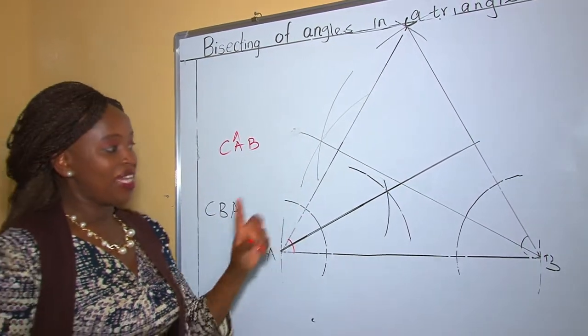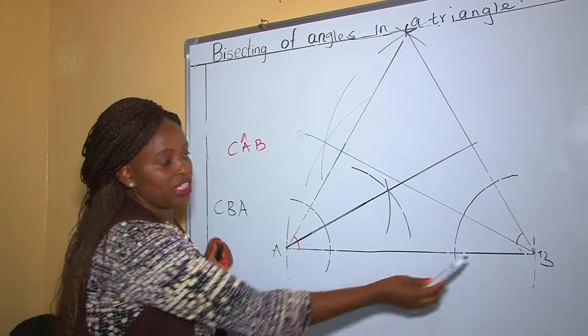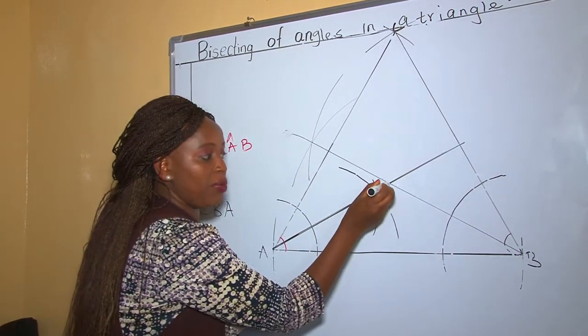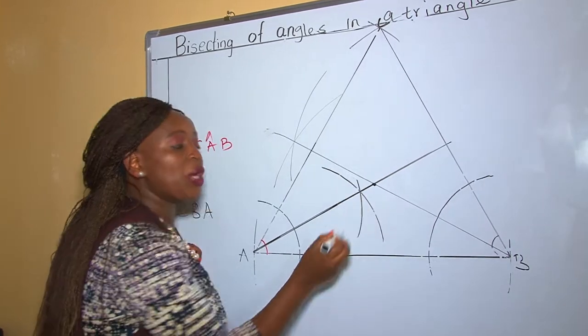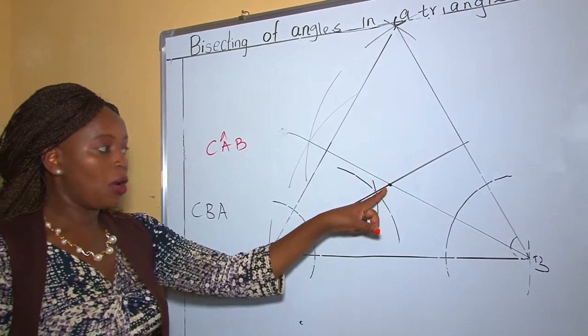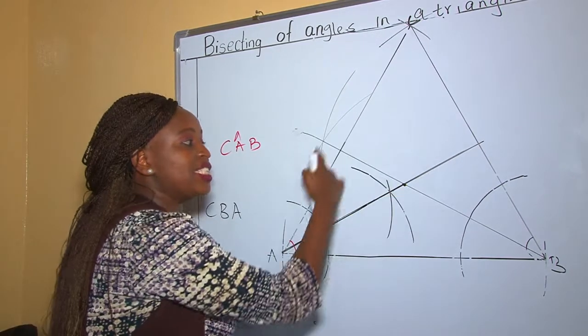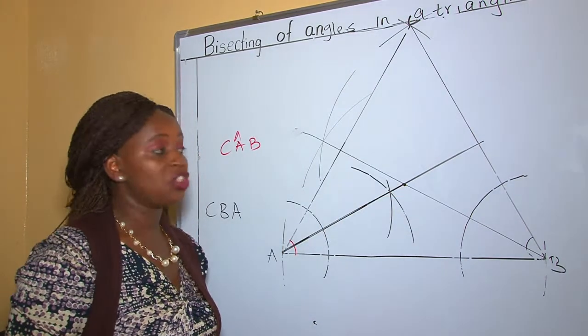Now the two bisectors, this bisector and this bisector, have met at a given point. This point is where you normally put your compass and now draw a circle touching the sides of the triangle.